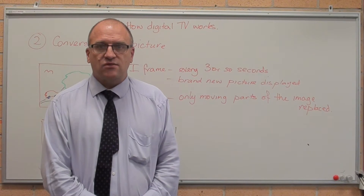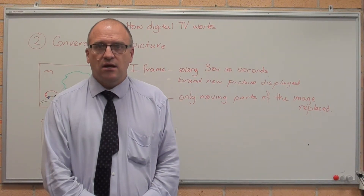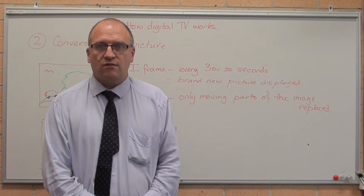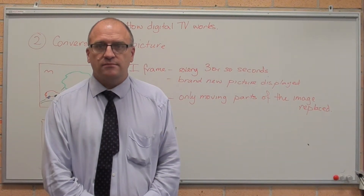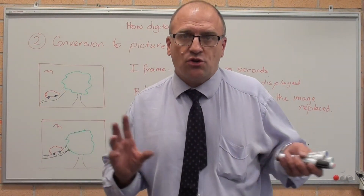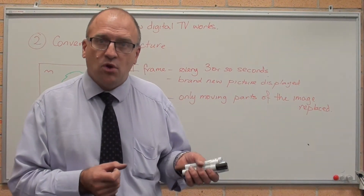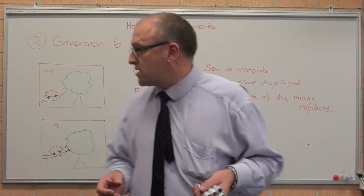The I-frame happens every 3 seconds or so. The B and P frames are basically looking for changes. Right now I am standing absolutely still — the only thing moving is my mouth. So the only part of the picture that needs to change in this entire video is the section around my chin. Because of that, this video is fairly highly compressed — it's just sending 6 megabytes every 3 seconds and maybe 32x32 pixels worth of information where my mouth is on screen. But when I move, of course, it has to update a lot more moving squares and parts of the image.